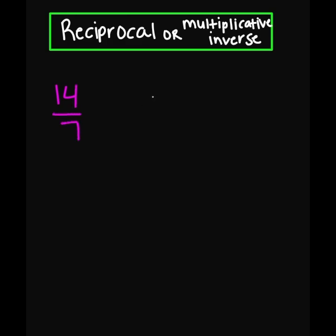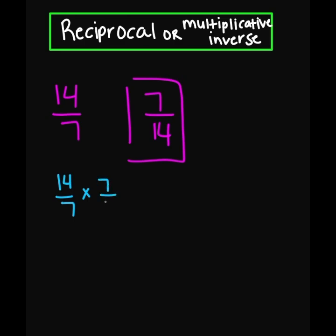This is going to equal 7 over 14. And if I check my work, 14 over 7 times 7 over 14 — if I multiply my number times the reciprocal, it has to equal 1. 14 times 7 is going to equal 98.